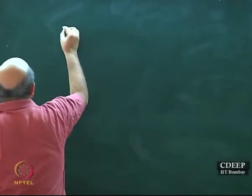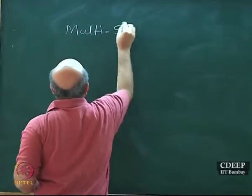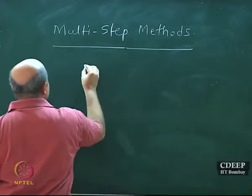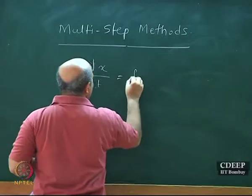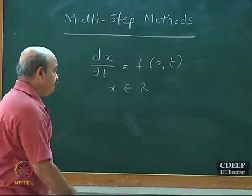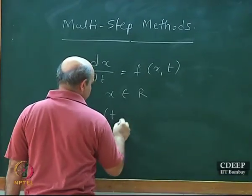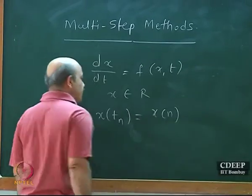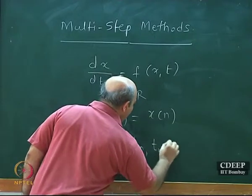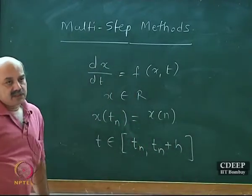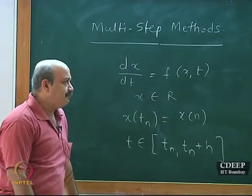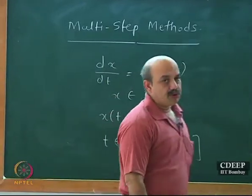We have been looking at multi-step methods. We have this differential equation dx/dt = f(x,t) where x belongs to ℝ — we are looking at a scalar differential equation. Our problem is to move from the initial condition: we want to integrate this initial value problem from t_n to t_n + h, where h is the fixed integration step size.